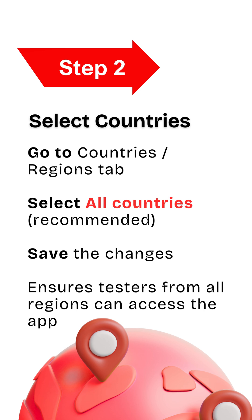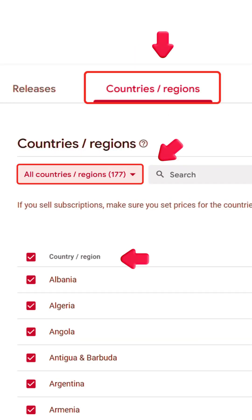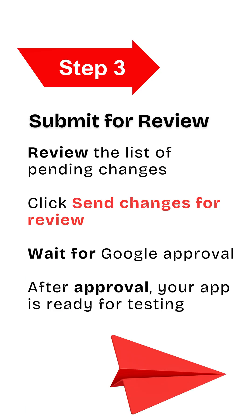Next, go to the Countries and Regions tab. Select All Countries for the best access, then save your changes. This makes sure testers from every region can install your app.